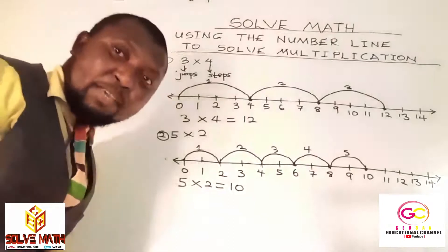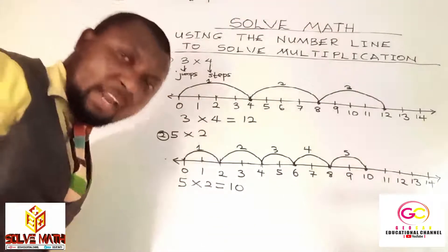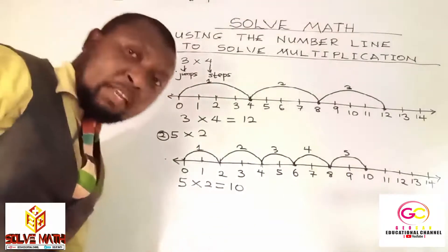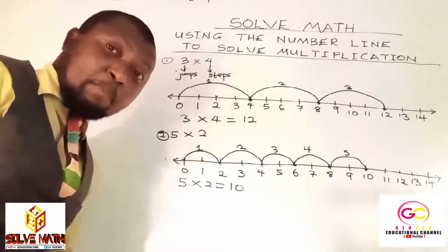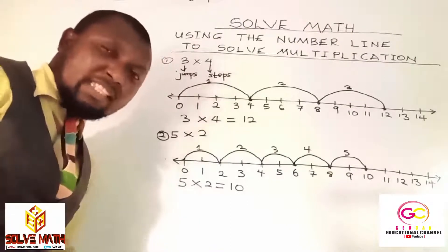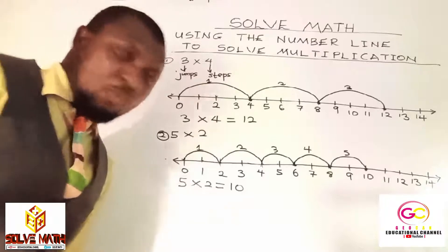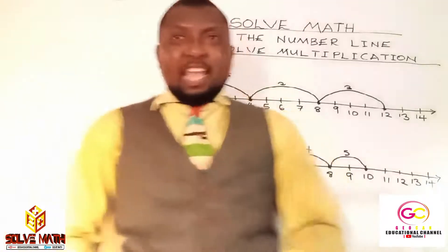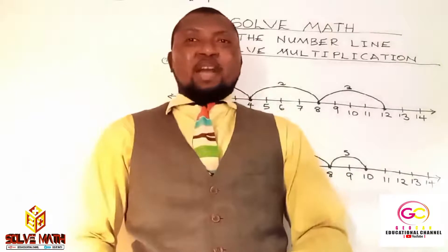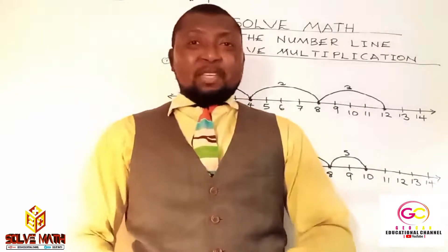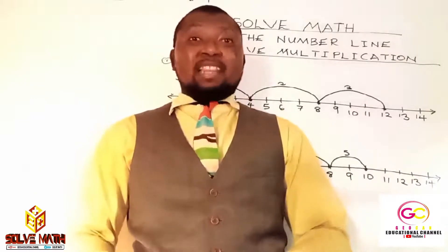Easy as A, B, C, D. You've used the number line in solving multiplication. Isn't math interesting? Isn't math beautiful? Math is amazing if you follow simple rules. This brings us to the end of today's solve math. Till we meet again. Keep solving more of math. The solve math. Love math. Adios.